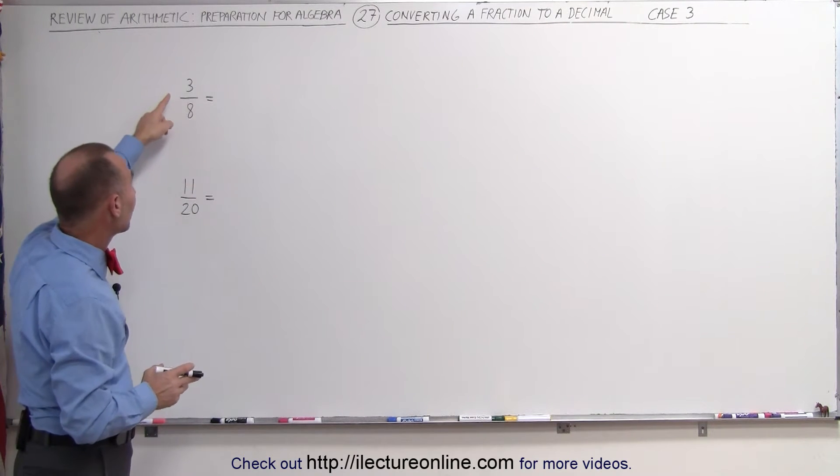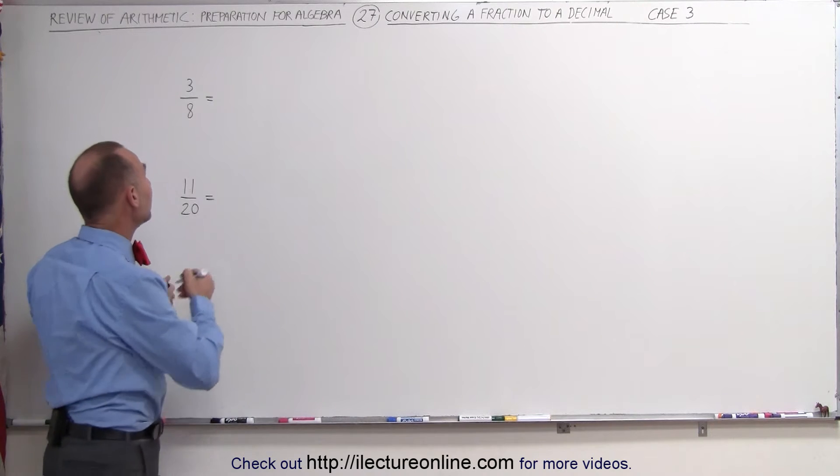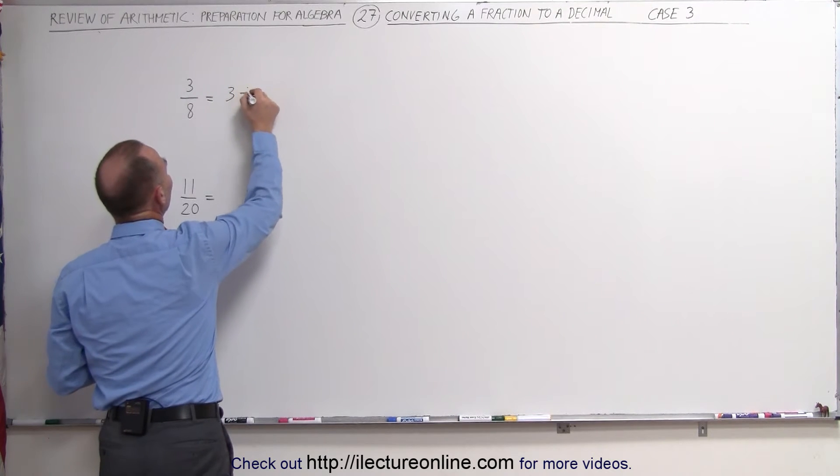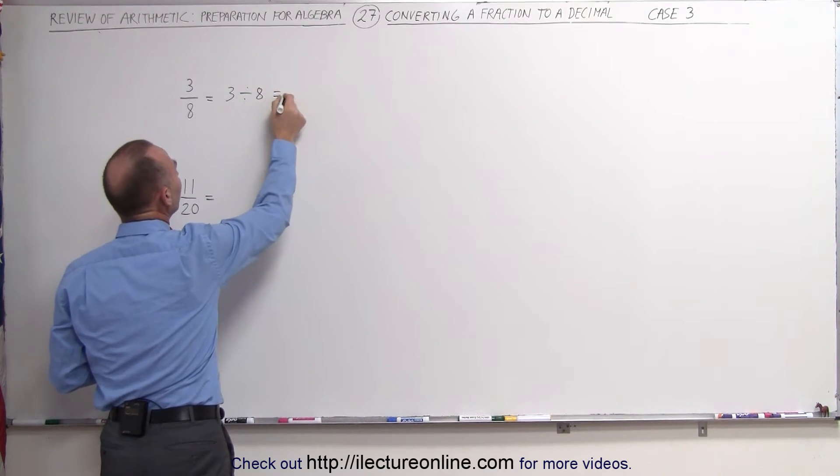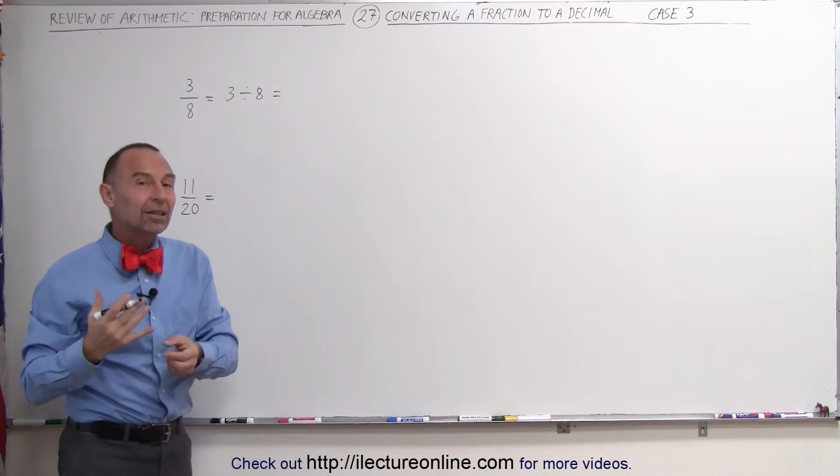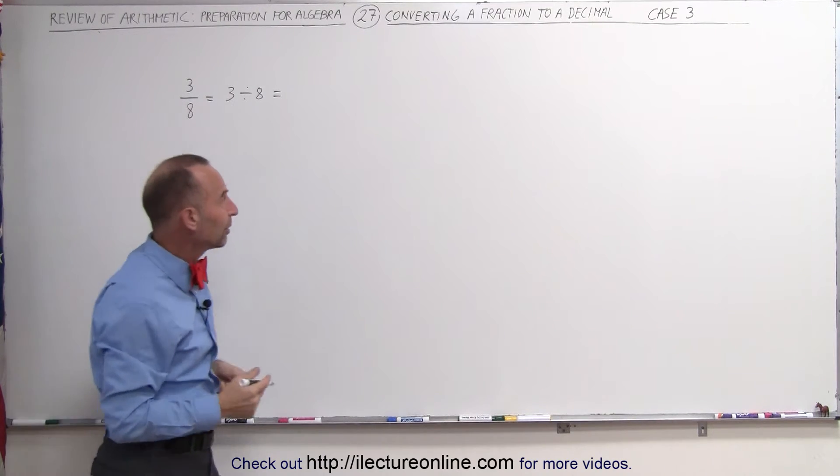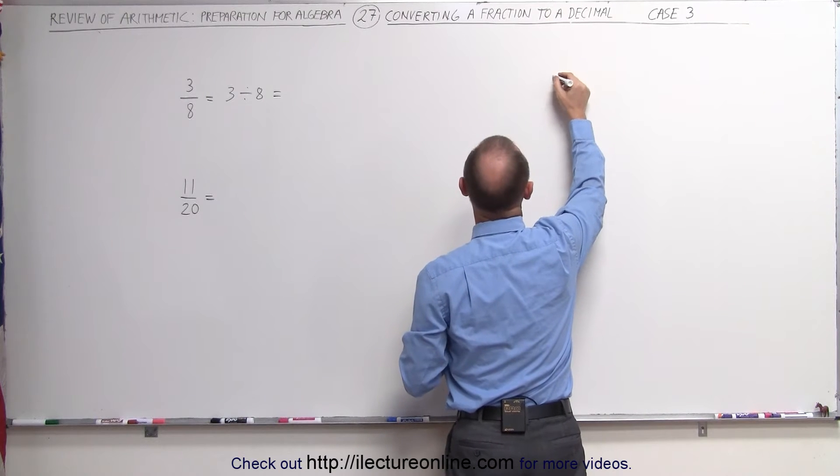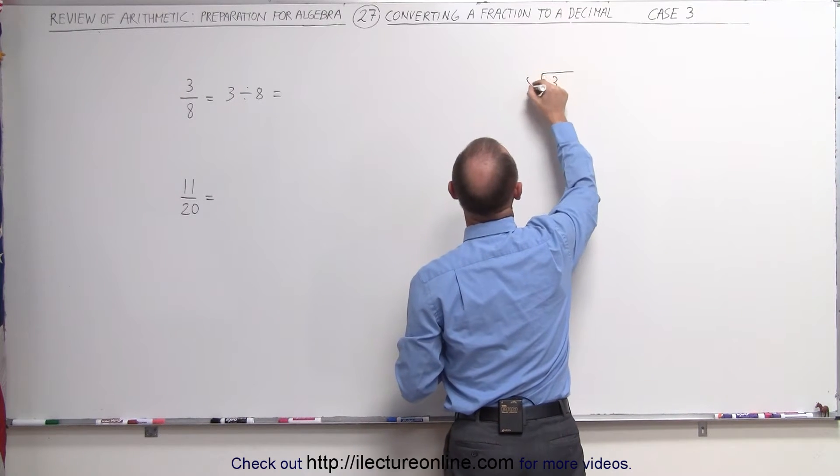You have to realize that when you have 3 over 8, that really means 3 divided by 8. In other words, we can do a longhand division and get the decimal that way. So let's do that. Let's take the number 3 and divide it by 8.